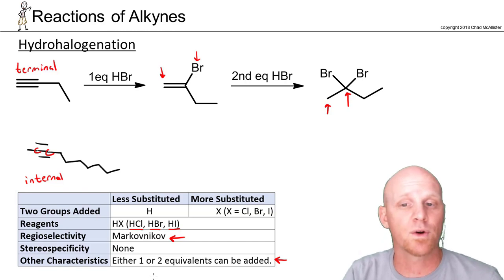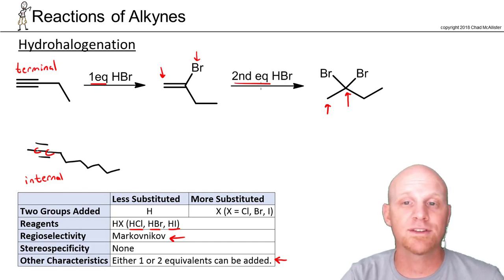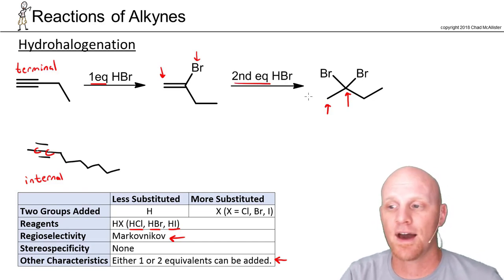The question is, do you have one equivalent or two? That's based on how you specify the reagents. If you just say one equivalent, you're going to end up with an alkene. But if you say we're adding two equivalents or excess, then we're going to add it all the way to the alkane.